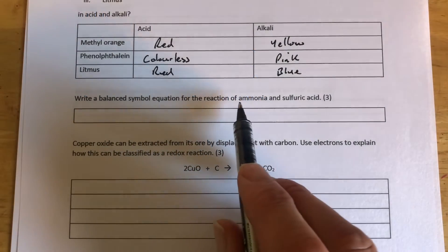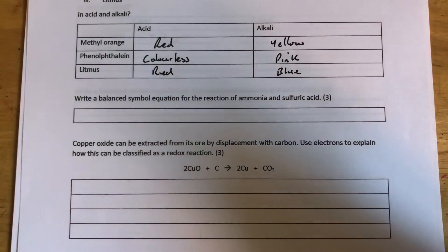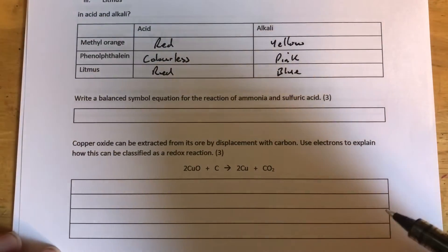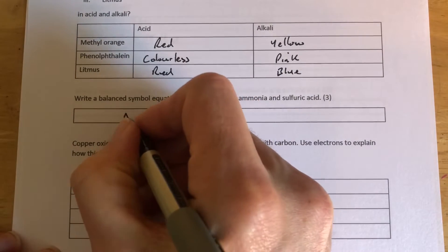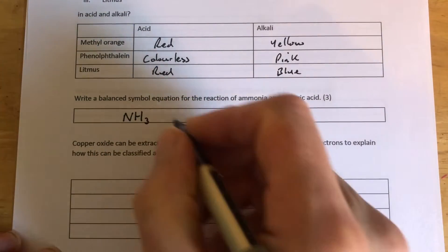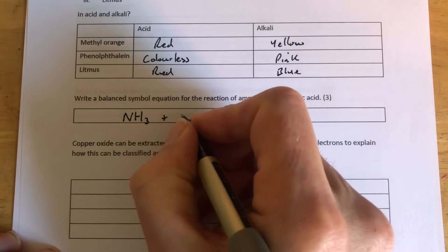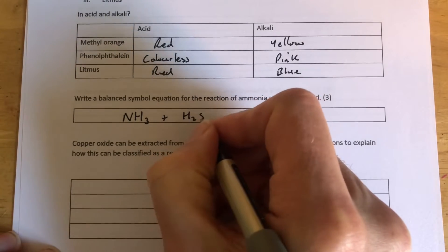We're writing a balanced symbol equation for the reaction of ammonia and sulfuric acid. With questions like this, you need to have learned your common formulae. You need to know that ammonia's formula is NH3, and sulfuric acid's formula is H2SO4.